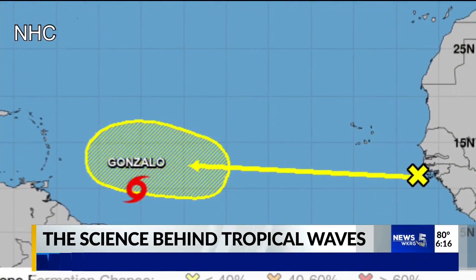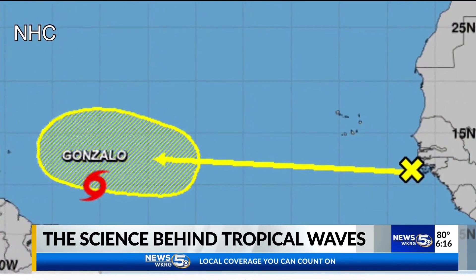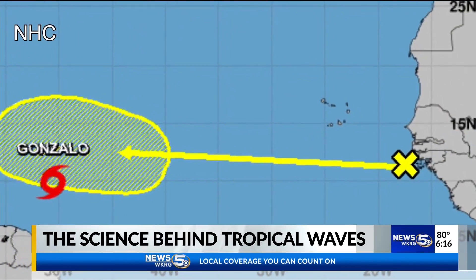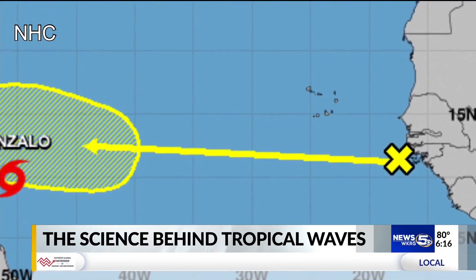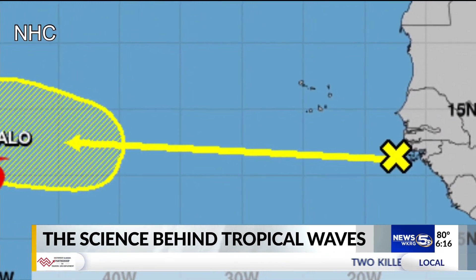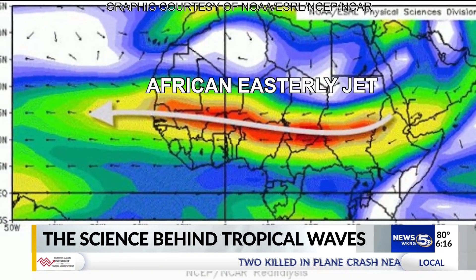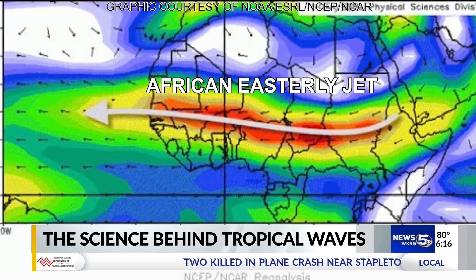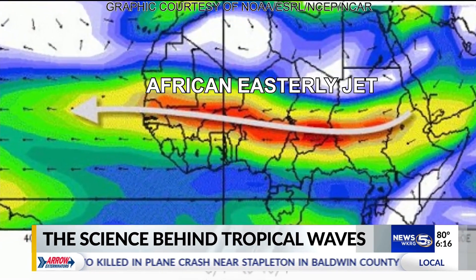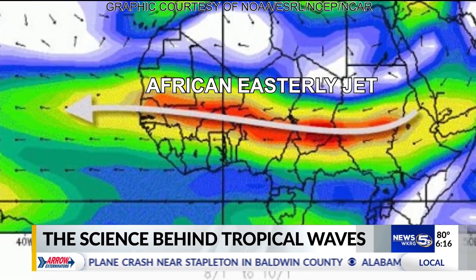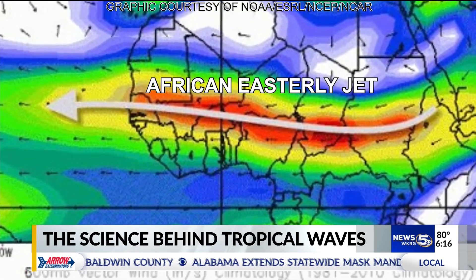Once the tropical wave forms in Africa, it moves over the Atlantic. This happens when the hot, dry air from the Saharan desert mixes with the cooler, moist air from the rainforest to form a band of strong wind called the African Easterly Jet. This pushes these waves into the Atlantic.